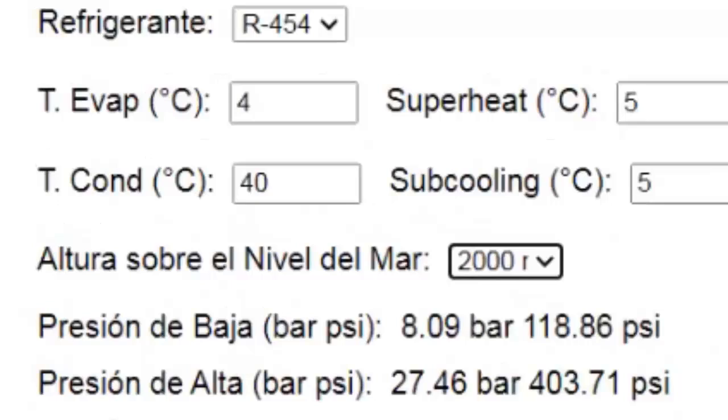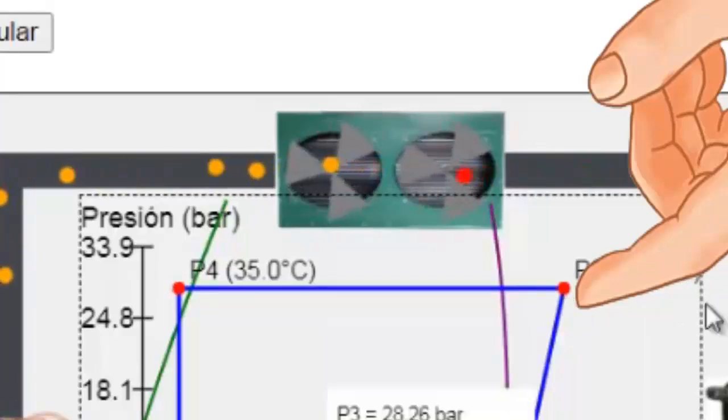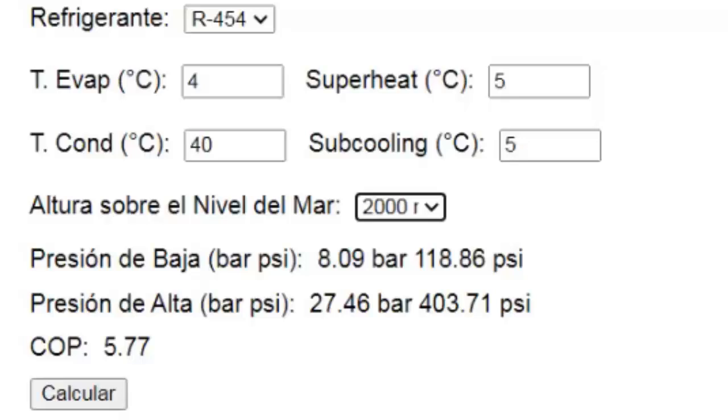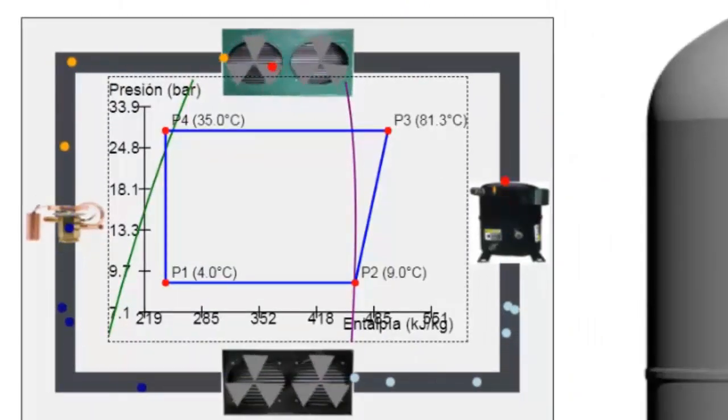In this part of the simulator, we can view the discharge temperature. This is the refrigerant temperature immediately at the compressor outlet. Let's see how it changes. Remember, the link to this simulator is available in the video description.